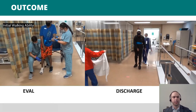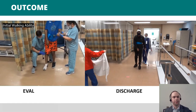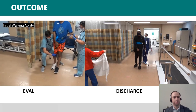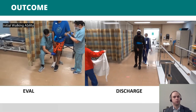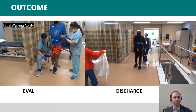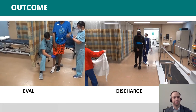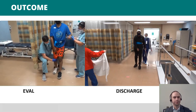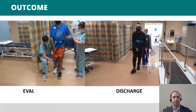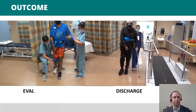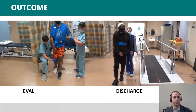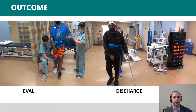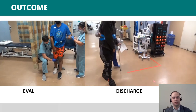This slide compares videos from very early on in his plan of care and then later at discharge. The first video is a refresher of where he started — needing lots of assistance, very impaired and slow. In the discharge video, you can appreciate how different his level of assistance is, how much more functional he is, and even his improved gait quality, despite that not being a focus of our training.